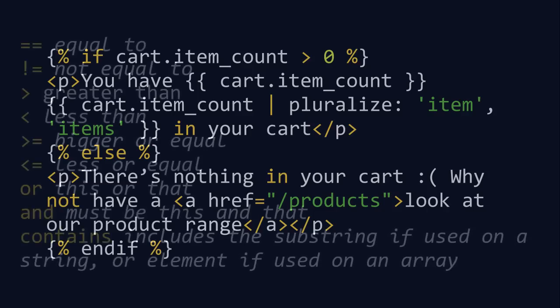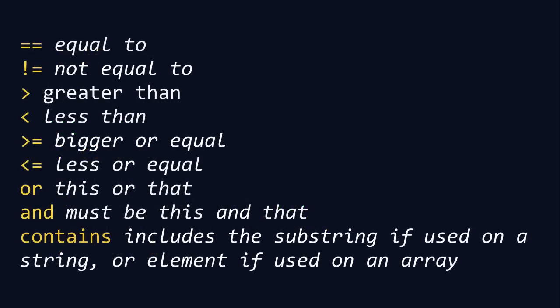The full list of operators includes: equal to (==), not equal to, greater than, less than, greater than or equal to, less than or equal to, or, and, and contains. The contains operator lets you look for a string within a string — for example, if a product title contains 't-shirt', you can output something specific within your template. You can use these for a whole range of things, including cart scenarios like the one just shown.